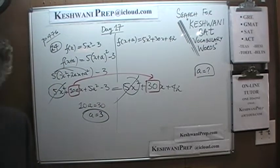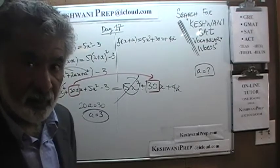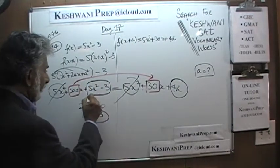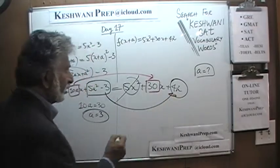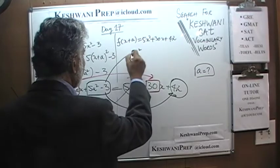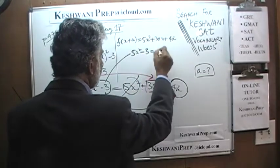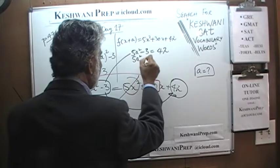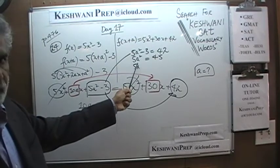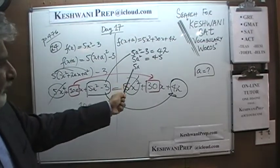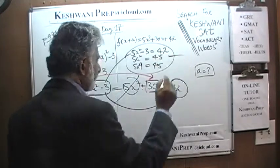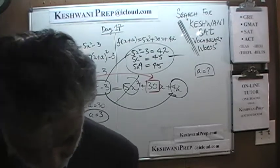If we wanted to, we could verify this. The constant in the given expression is 42, and our constant is 5a squared minus 3. These must also equal each other: 5a squared minus 3 equals 42, so 5a squared equals 45. With a equal to 3: 3 times 3 is 9, and 5 times 9 is 45. It checks out — a is equal to 3. That was number 24.